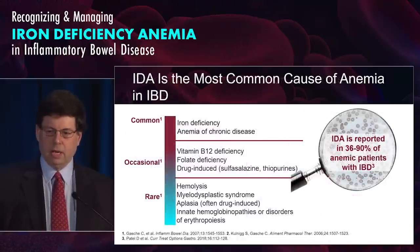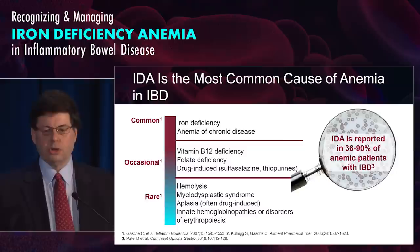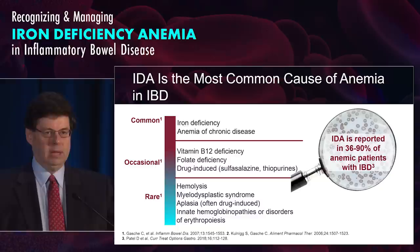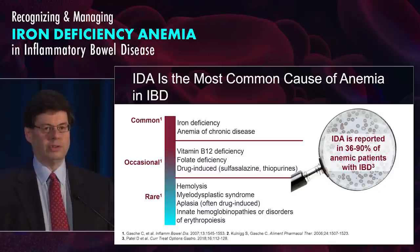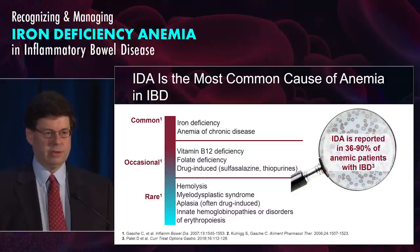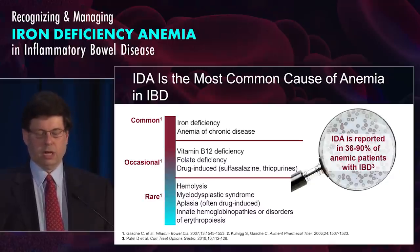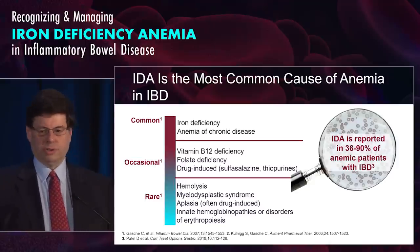If we look at the common causes of anemia in IBD, the most common cause is iron deficiency anemia, followed by anemia of chronic disease. Then we have other types that are more discussed but less frequently seen. With Crohn's, we see B12 deficiency. Folate deficiency can be seen, as well as drug-induced anemia with sulfasalazine, the thiopurines, and other medications, and some more rare associations.